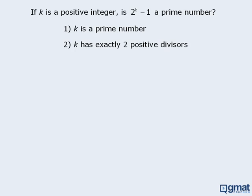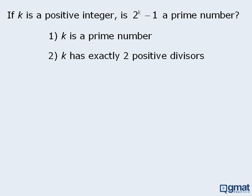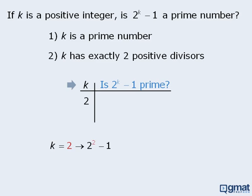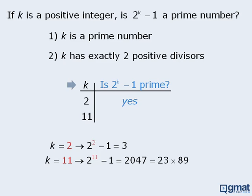Just for fun, let's determine the correct answer to this question. To do this, we'll use the table method. We'll choose values of k that are prime, and then using these values, ask the target question: is 2 to the power of k minus 1 a prime number? If k must be prime, then k could equal 2. If k equals 2, then 2 to the power of k minus 1 will equal 3, in which case the answer to the target question is yes. Now k could also equal 11. If k equals 11, then 2 to the power of k minus 1 will equal 2,047. Now 2,047 is not prime, since it equals 23 times 89. So when k equals 11, the answer to the target question is no.